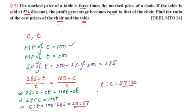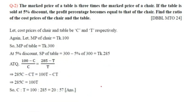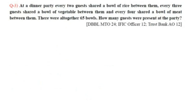Question number three: At a dinner party, every two guests shared a bowl of rice between them, every three guests shared a bowl of vegetables between them, and every four guests shared a bowl of meat between them. There were altogether 65 bowls. How many guests were present at the party?